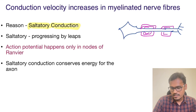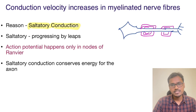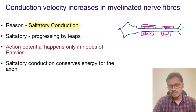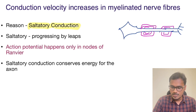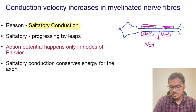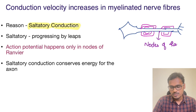The action potential is produced only at the nodes. These nodes are called nodes of Ranvier. So the action potential is produced only at the nodes of Ranvier, so that it looks like the action potential is jumping from one node of Ranvier to the next.